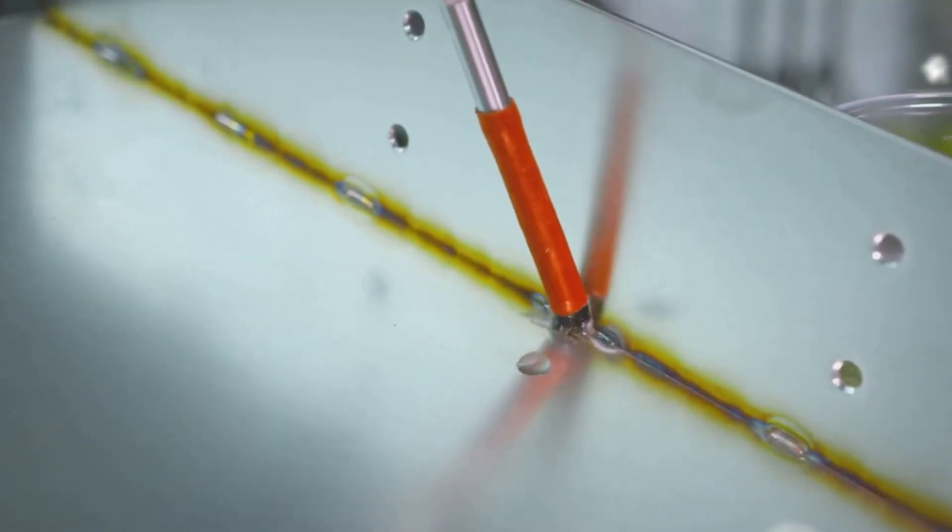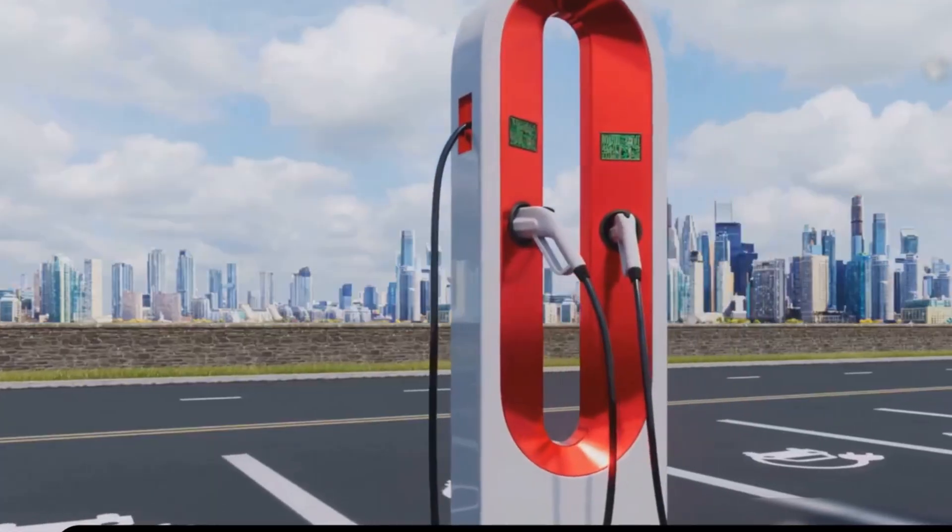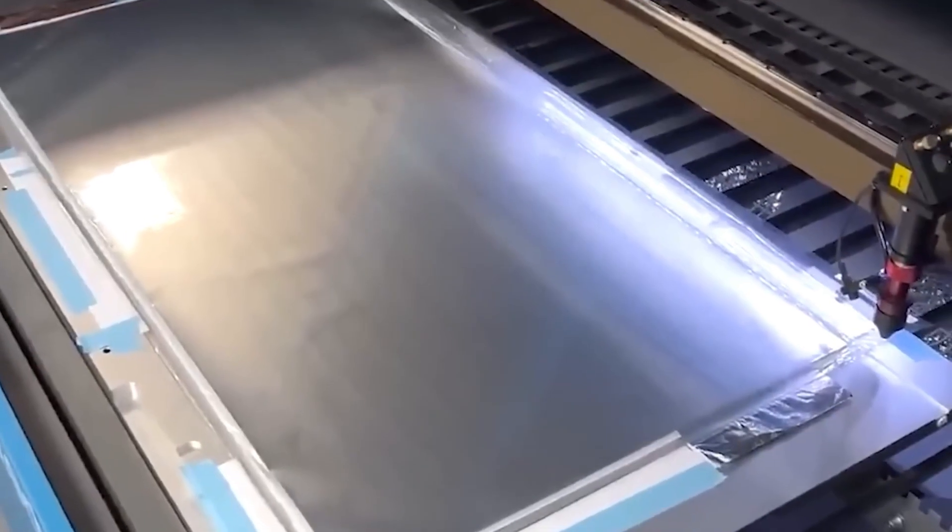That's possible because the electrodes heal themselves. Micro-cracks that ruin lithium batteries are repaired automatically in aluminum cells, keeping them strong for decades.